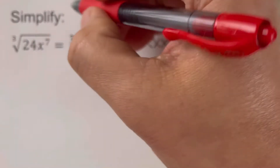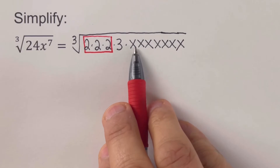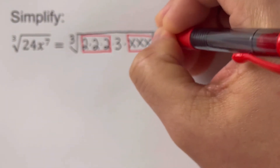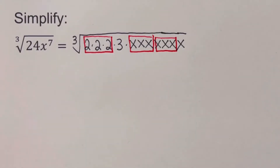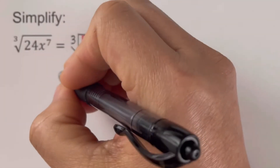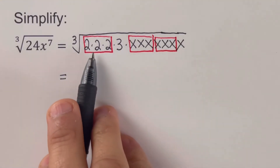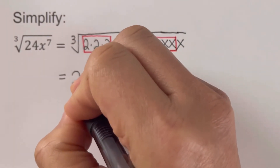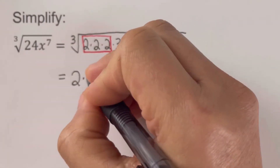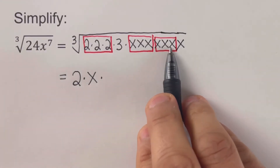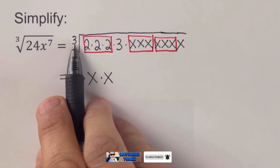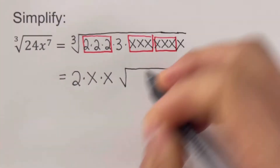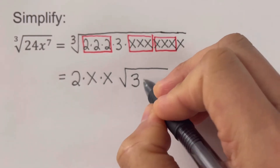There are three 2s, so we take those as one group. The 3 is by itself, so it can't form a group of 3. We have three x's — that's one group. Then another three x's — that's another group. The ones grouped together are placed outside the radical symbol: one group of three 2s gives us 2, one group of three x's gives x, and another group of three x's gives another x. The leftover 3 and one remaining x stay inside the radical.